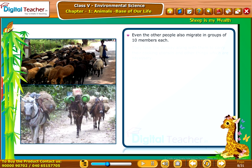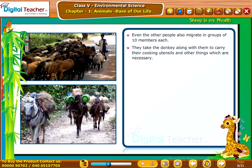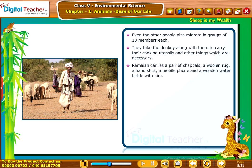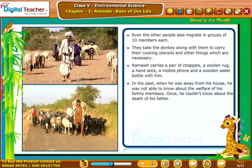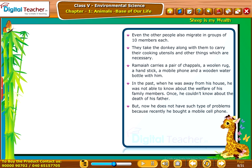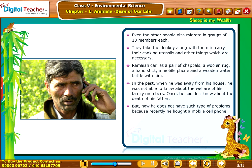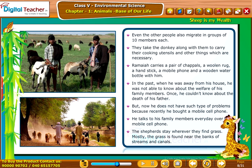Other shepherds also migrate in groups of 10 members each. They take a donkey along to carry their cooking utensils and other necessities. Ramaya carries a pair of chappals, a woolen rug, a hand stick, a mobile phone, and a wooden water bottle. In the past, when he was away from home, he was not able to know about the welfare of his family members — once he couldn't know about the death of his father. But now he talks to his family members every day over the mobile phone.